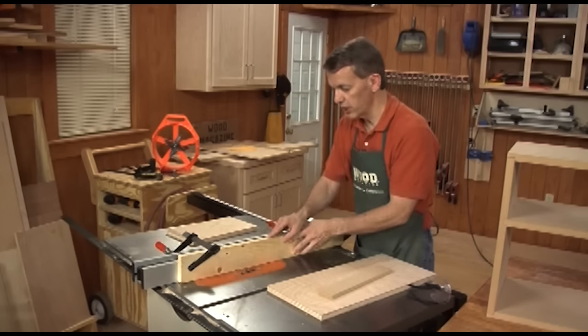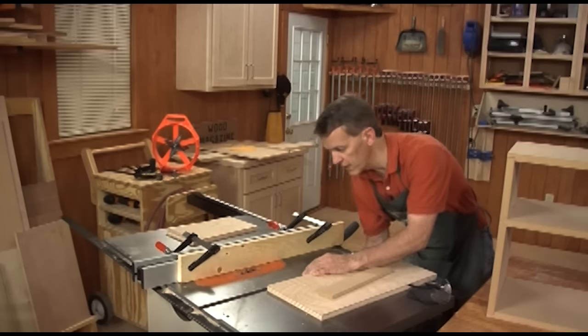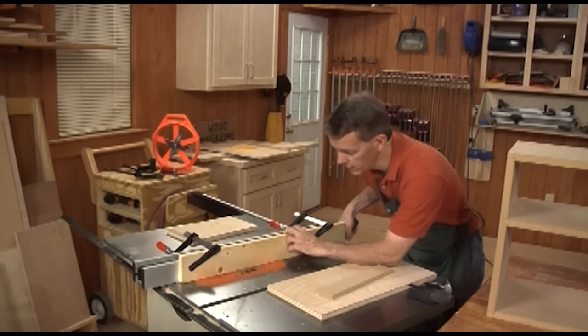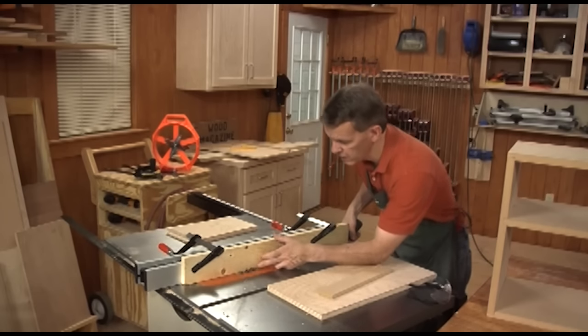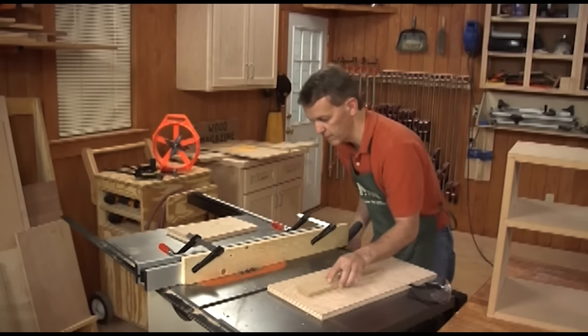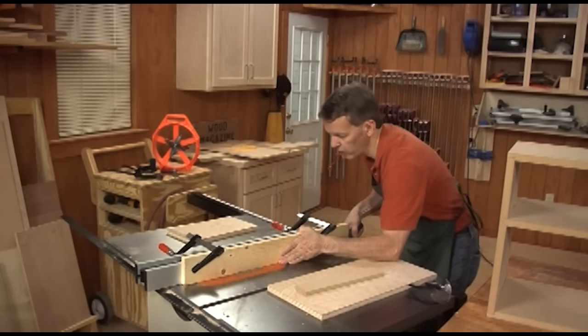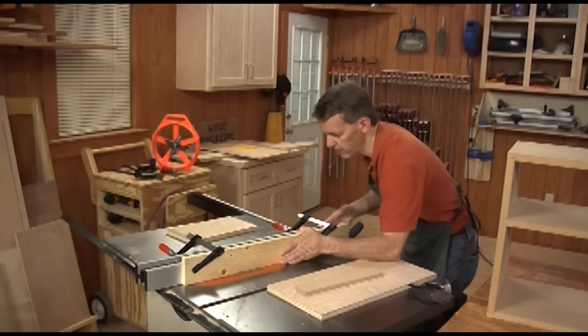You'll notice I've got an auxiliary fence clamped to my rip fence, and here's why. I need to raise the blade into that fence to bury part of it, so I'm only exposing exactly one half inch. So I'm going to lower the blade, bring it over so that auxiliary fence just covers the outside chipper, and then cut into it.